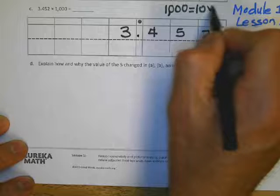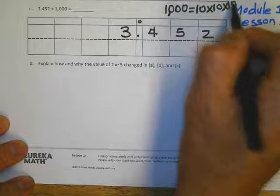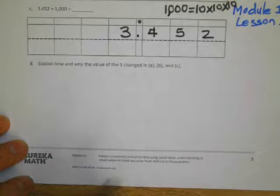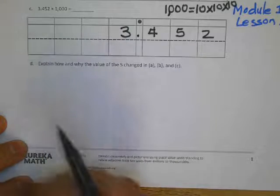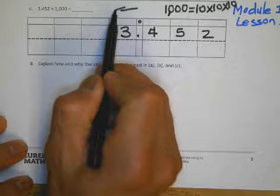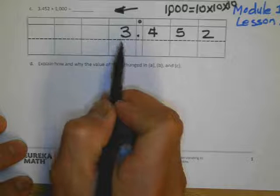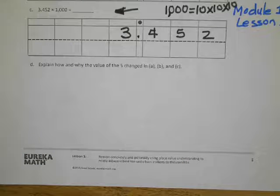So if we multiply by one thousand, that number has to increase. We're gonna move the numbers to the left. The number three...